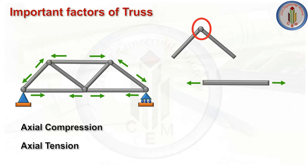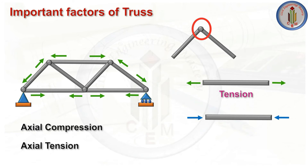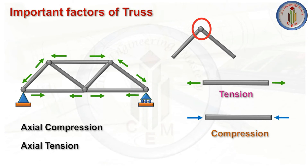Let me give a quick recap of tension and compression. When a member is subjected to two equal and opposite pulling forces, it tends to extend — the stress induced is called tensile stress and the corresponding force is called tensile force. When a member is subjected to two equal and opposite pushing forces, it tends to shorten — the stress is called compressive stress and the force is called compressive force. Keep this in mind while solving truss problems.